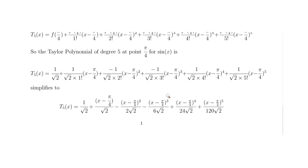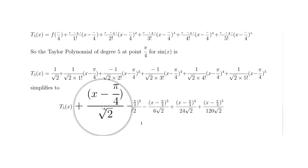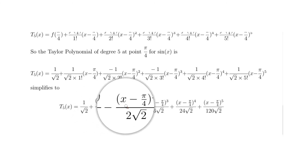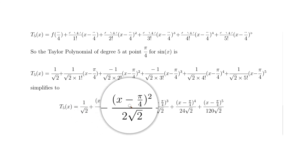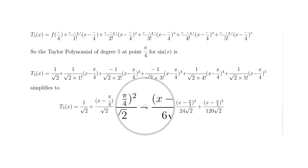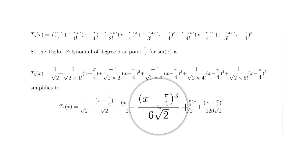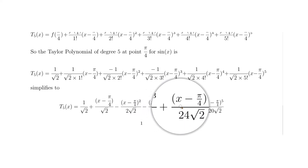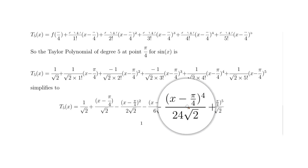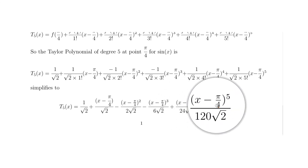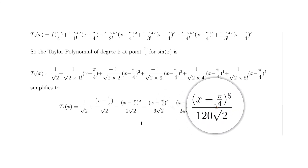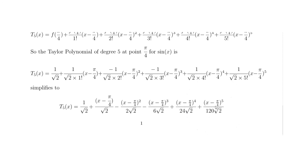Our complete Taylor polynomial is: 1/√2 + (x − π/4)/√2 − (x − π/4)²/(2√2) − (x − π/4)³/(6√2) + (x − π/4)⁴/(24√2) + (x − π/4)⁵/(120√2). That completes the answer. Thanks for watching, and please leave any comments below.